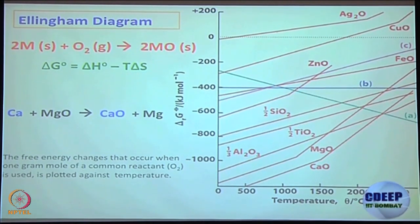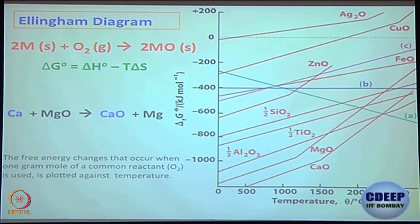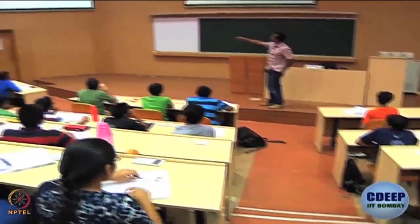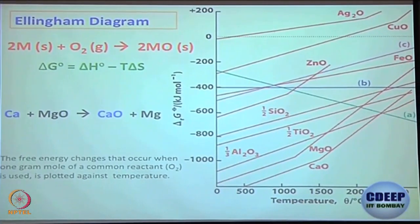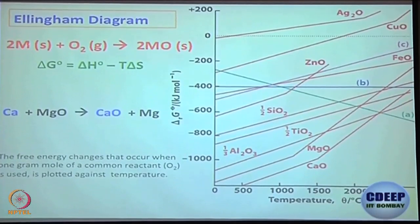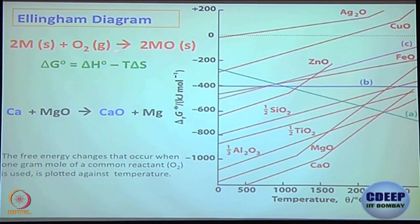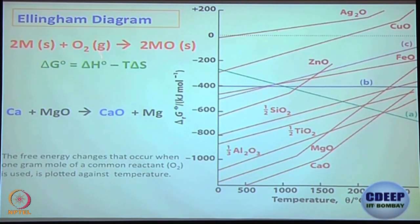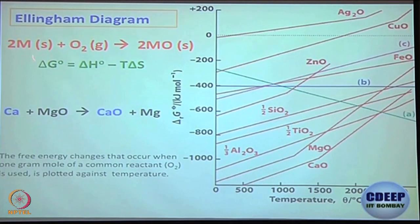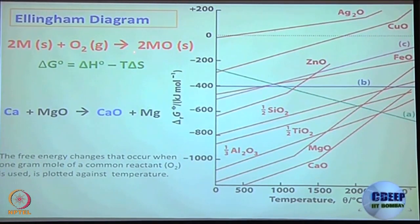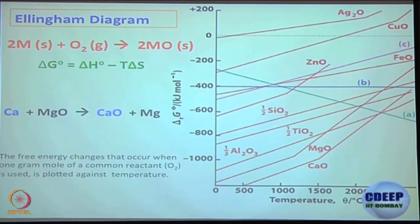So as you increase temperature, metal oxide curves are becoming more and more positive, but the green curve — which is for carbon plus oxygen going to carbon monoxide — has a downward slope. That reaction is going to help mankind get pure metal at a very cheap rate. We need a solution which can work out for most metals. Once more: for the reaction metal solid reacting with gas going to metal oxide, delta S is negative because gas is consumed and you are forming solid.